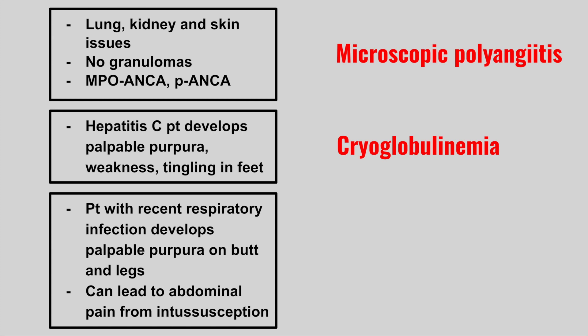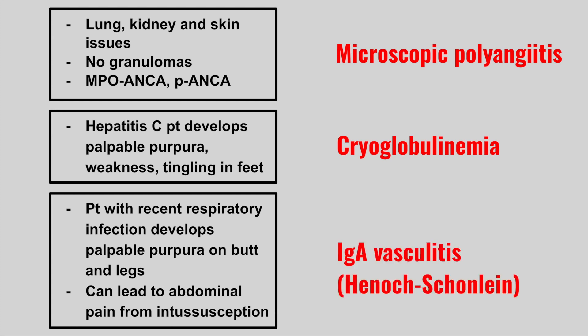Next, we have a patient with a recent respiratory infection who develops palpable purpura on the buttocks and legs, and it can lead to abdominal pain from intussusception. So this is IgA vasculitis, another name for it is Henoch-Schönlein. Look out for the recent infection followed by the development of vasculitis.